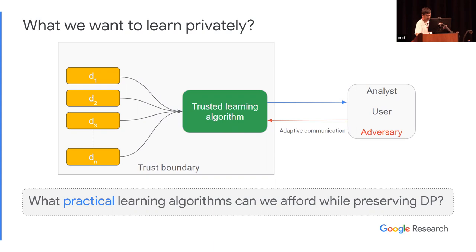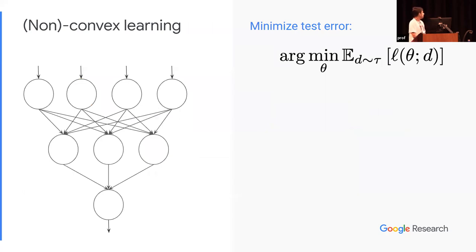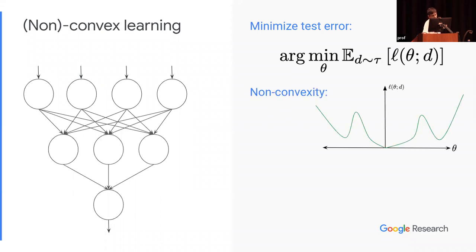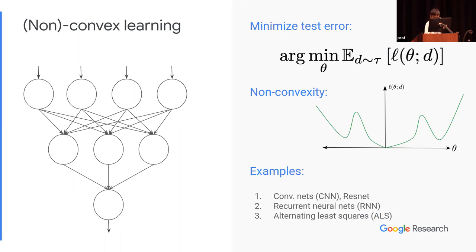To make things more formal, throughout the talk I'll be focusing on non-convex learning problems, looking at what is called minimizing the population risk or test error — given a model, you want to minimize the loss on data drawn from some distribution in expectation. Non-convex models can have arbitrary behavior; typical examples include ConvNets, ResNets, recurrent neural nets, and alternating least squares.